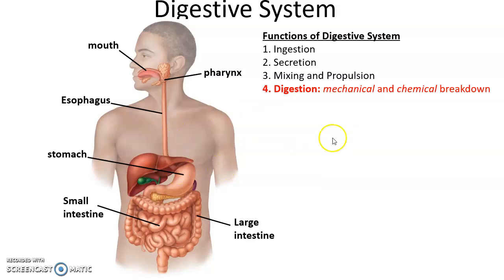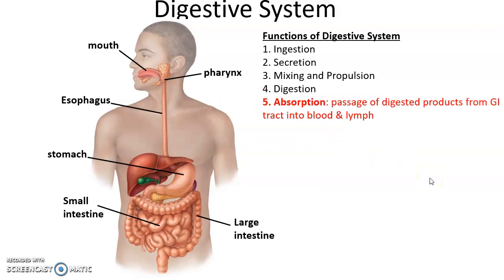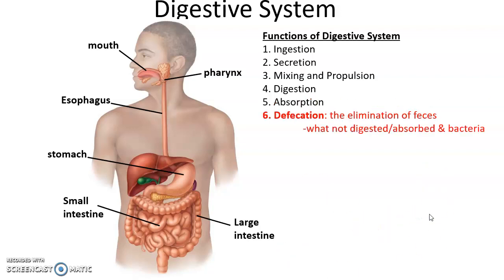Chemical digestion is usually done by enzymes. Absorption is the movement of the digested nutrients through the gastrointestinal tract — usually the small intestine — and into the bloodstream and the lymph of the lymphatic system. And then finally, defecation: elimination of the feces, of the materials that were not digested, were not absorbed, and also many bacteria that live in our large intestine.